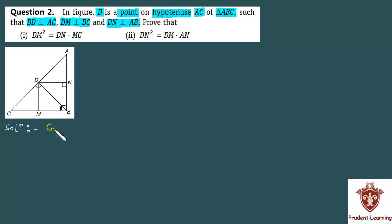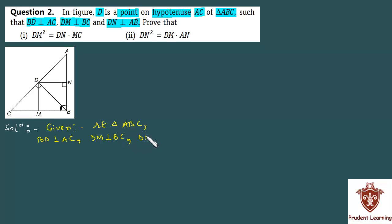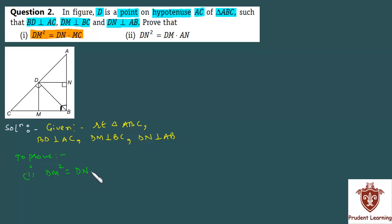Let's write the given information. We are given right triangle ABC with BD perpendicular to AC, DM perpendicular to BC, and DN perpendicular to AB. In the first section, we have to prove that DM squared is equal to DN multiplied by MC.